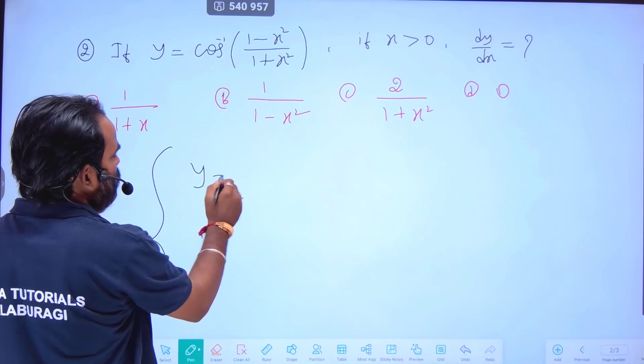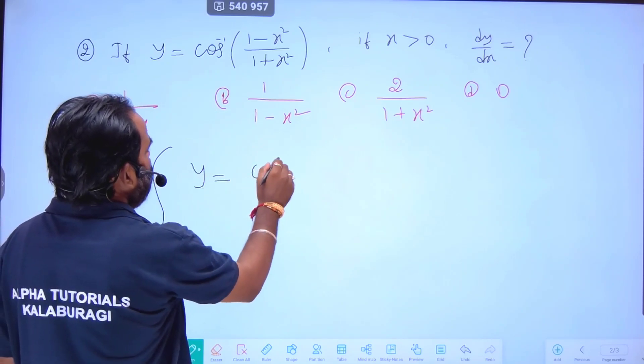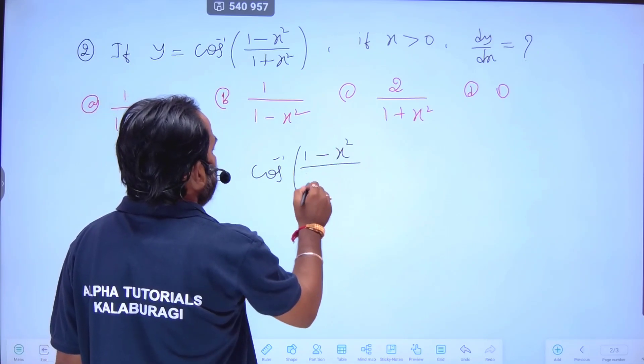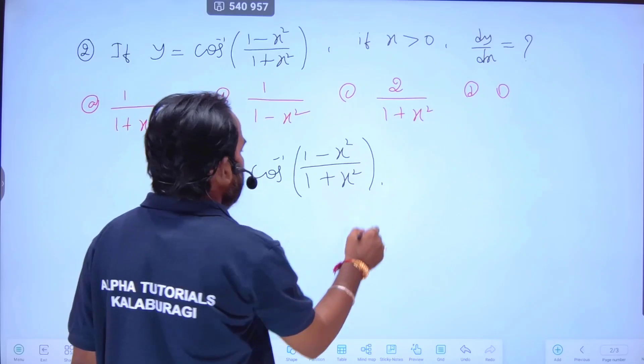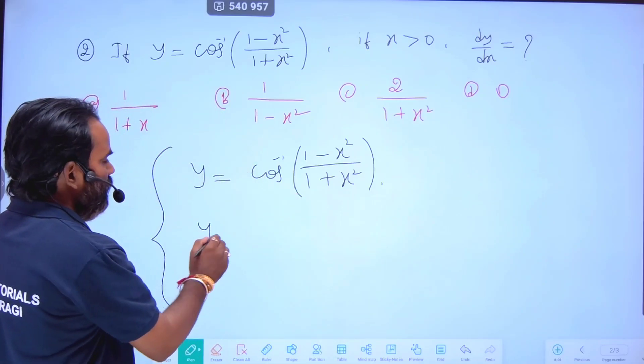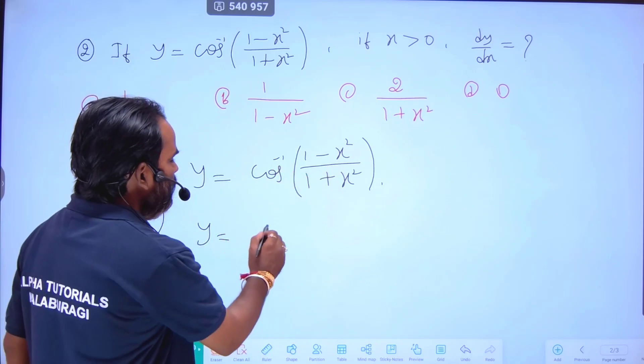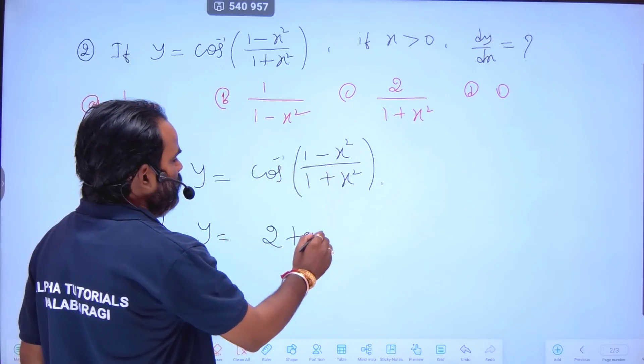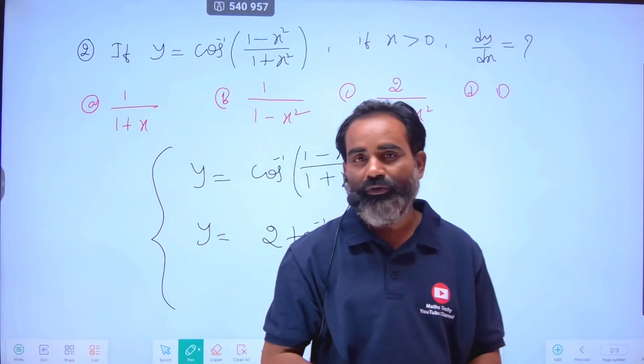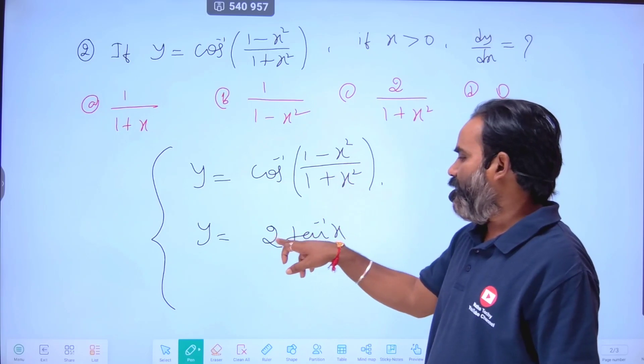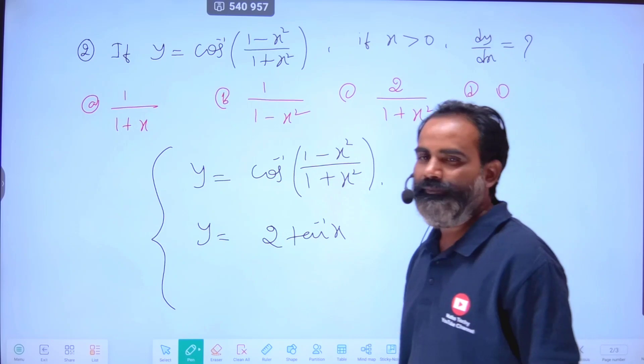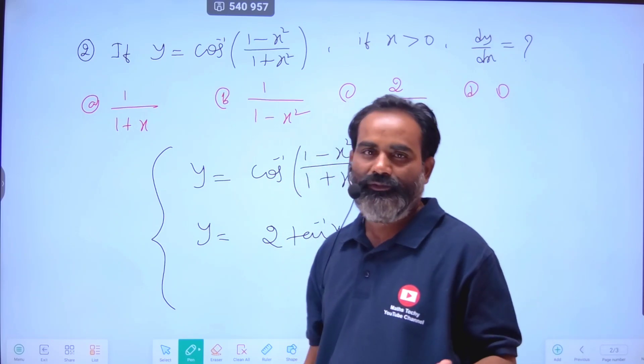In this case, y equals cos inverse of (1-x²)/(1+x²), and I need the differentiation. This is the formula - directly you can write this equals 2 tan inverse of x. Cos inverse of (1-x²)/(1+x²) equals 2 tan inverse of x. You have to remember this, even though the sign looks different.